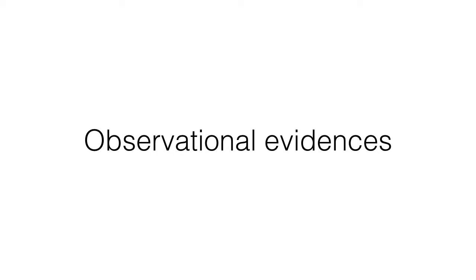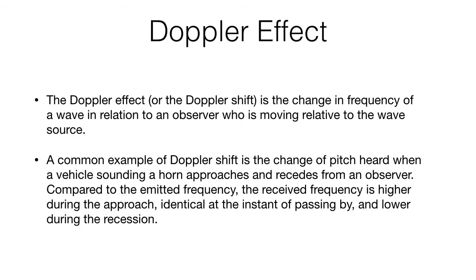Obviously, what we can do is have observational evidence. We look at what we can see and then try to interpret that from the evidence. In order to understand that, I need to explain what the Doppler effect is. The Doppler effect is the change in frequency of a wave in relation to an observer who is moving relative to the wave source.